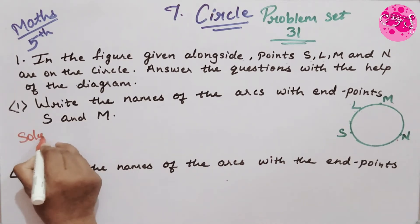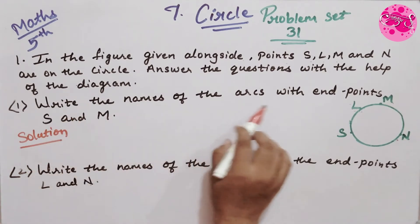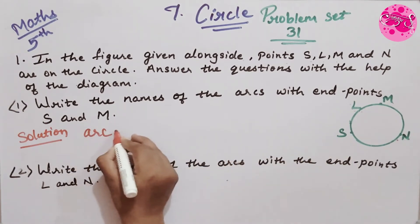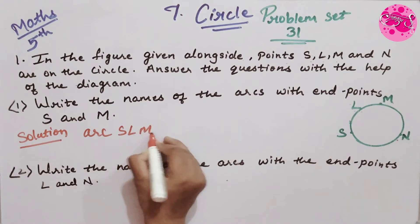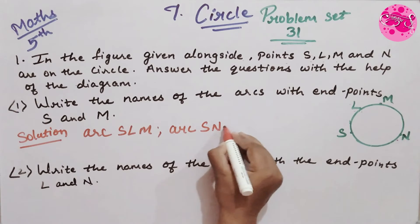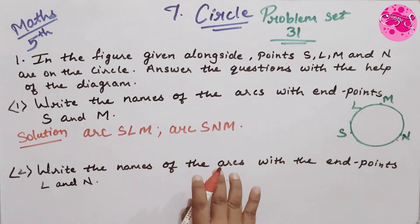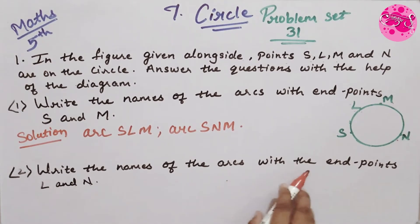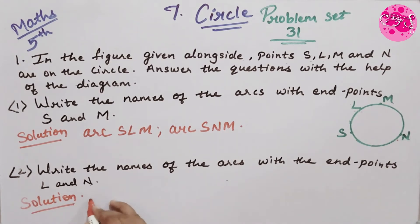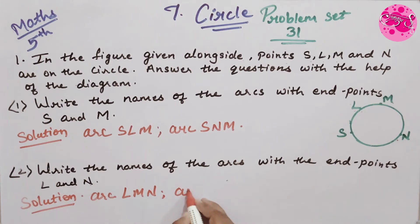Solution to the first question — write the names of the arcs with endpoints S and M. Answer: arc SLM and arc SNM are the arcs with the endpoints S and M. Second question — write the names of the arcs with endpoints L and N. Answer: arc LMN and arc LSN are the arcs with the endpoints L and N.